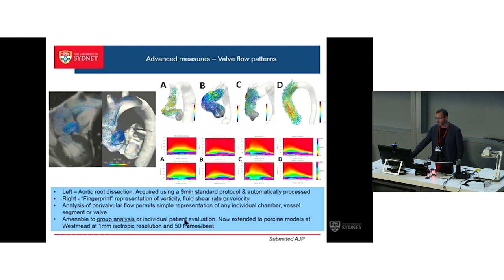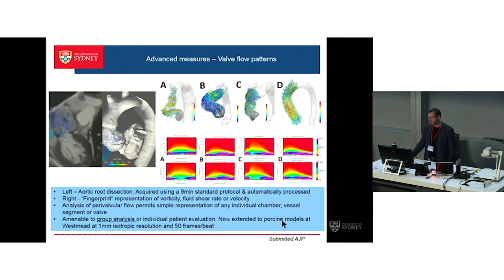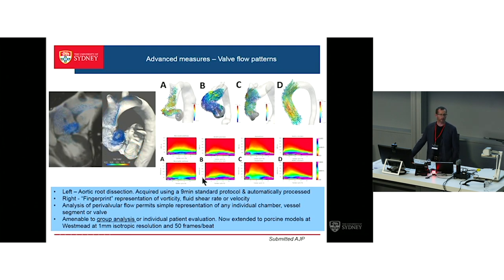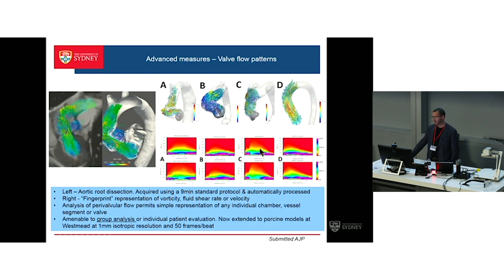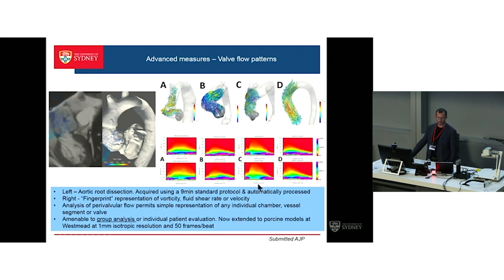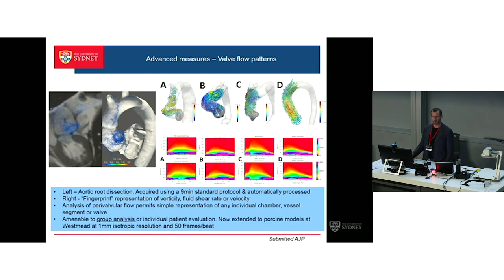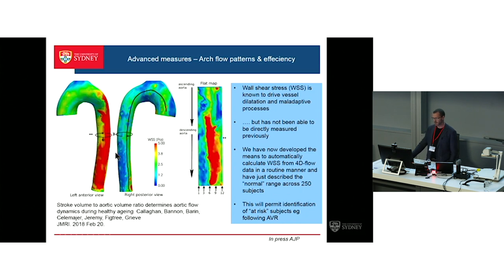Another thing we're doing with 4D flow: here are four different prosthetic valves — a bi-leaflet, a bioprosthesis, and a mono-leaflet. These coloured pictures depict fluid shear strain and vorticity, both reflecting the degree of abnormal flow. You can see this is the sort of profile you'd expect in a healthy person — a nice smooth profile with a peak at systole on a log scale. The bioprosthesis shows a really prolonged high fluid shear strain region and high vorticity, very abnormal flow. I think this is potentially very valuable in assessing the fluid dynamics outcome of your interventions.